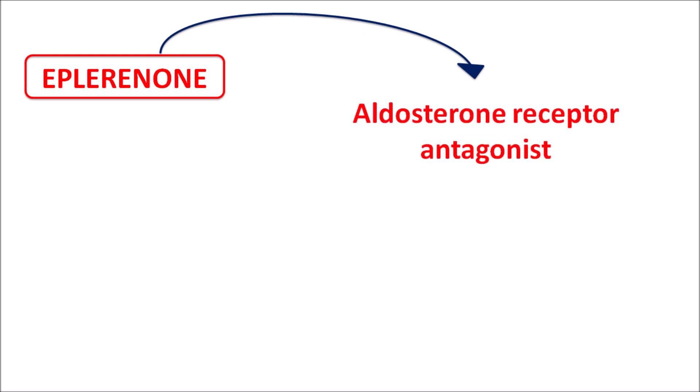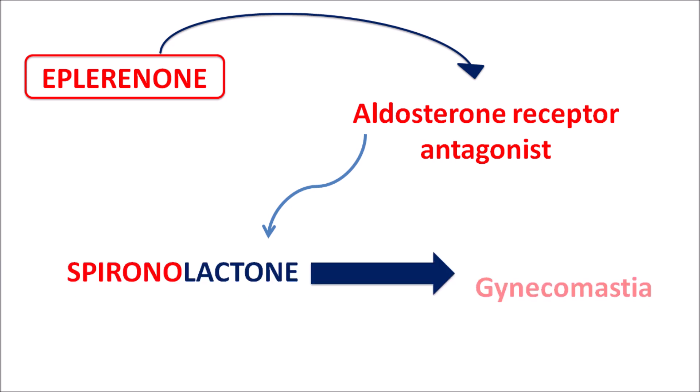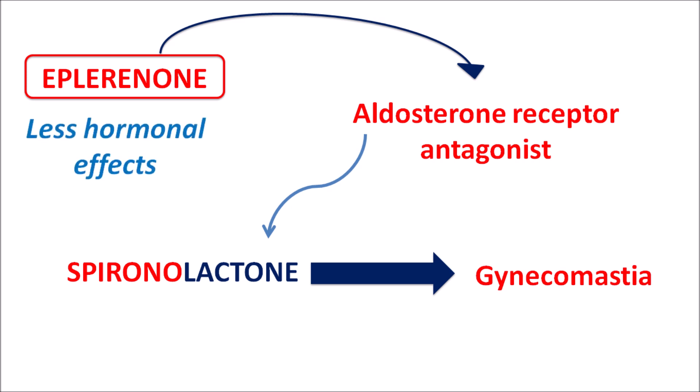Today we are going to discuss eplerinone. Eplerinone is an aldosterone receptor antagonist. We have a similar drug in this category, spironolactone, which is also an aldosterone antagonist. However, spironolactone is converted into a metabolite, canrenone, which acts on estrogen receptors to produce gynecomastia — enlargement of the breast in men. Eplerinone has somewhat less hormonal side effects compared with spironolactone, so gynecomastia is not pronounced with eplerinone.